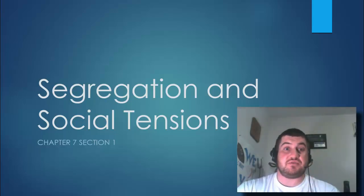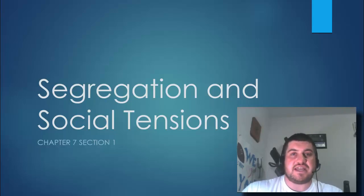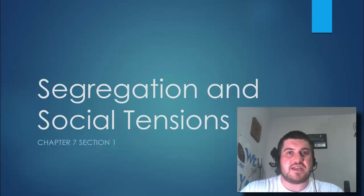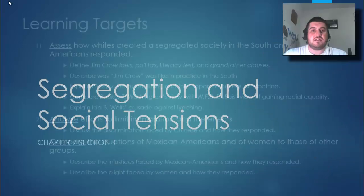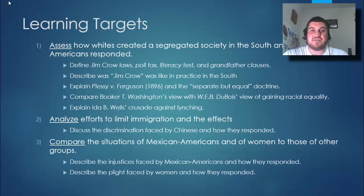Hi, and welcome back to U.S. History with Mr. Snyder. Today we're going to begin discussing Chapter 7, Issues of the Gilded Age, including racism, segregation, and different social tensions. Our learning targets: we will assess how whites in the South created a segregated society and how African Americans responded, analyze efforts to limit immigration and its effects, and compare the situations of Mexican Americans and women to those of whites.